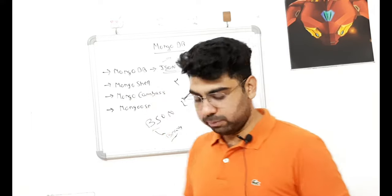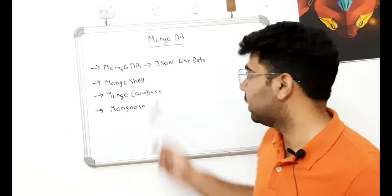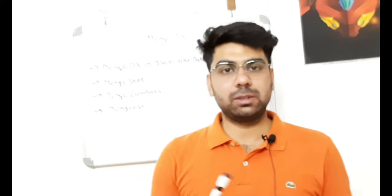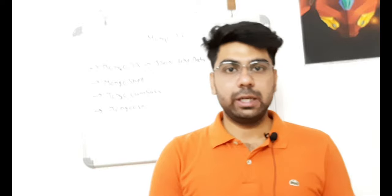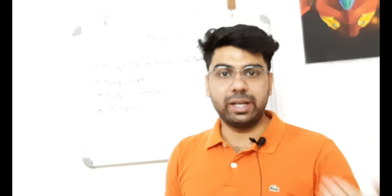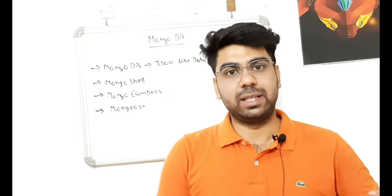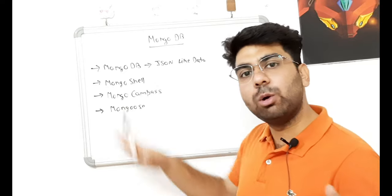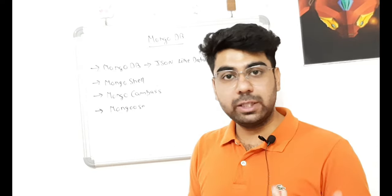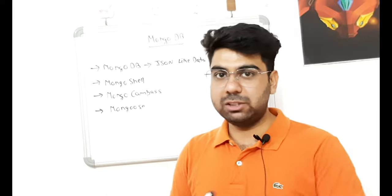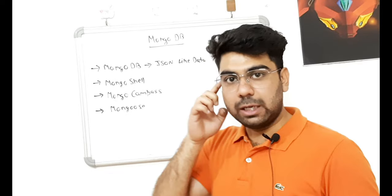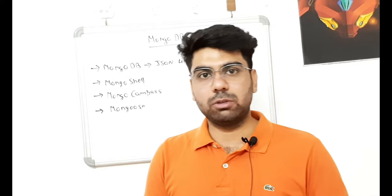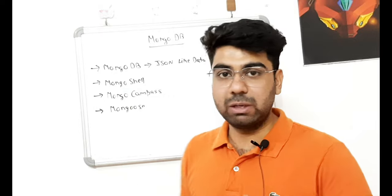The second term is Mongo Shell. In SQL we had a shell where we wrote commands for CRUD operations — how we create data, how we retrieve data, how we filter data, how we delete data. Here we use Mongo Shell. Mongo Shell is basically a MongoDB command prompt where we write all our commands. When we go to CMD, we just type 'mongo' and your Mongo Shell will start.